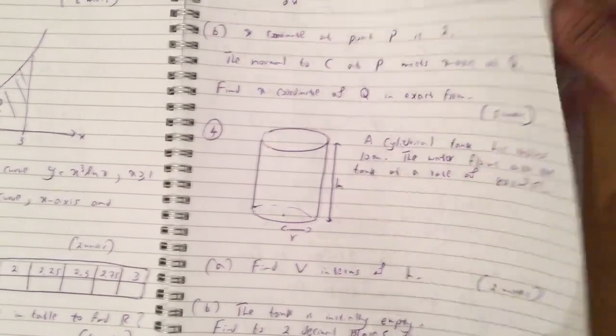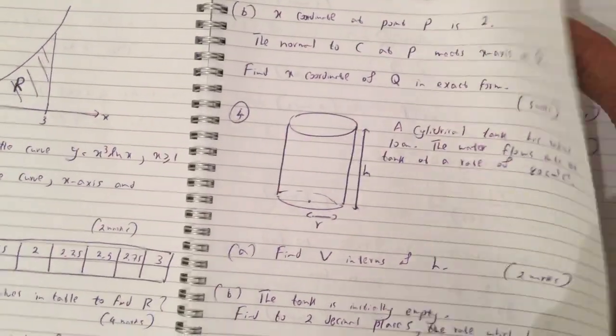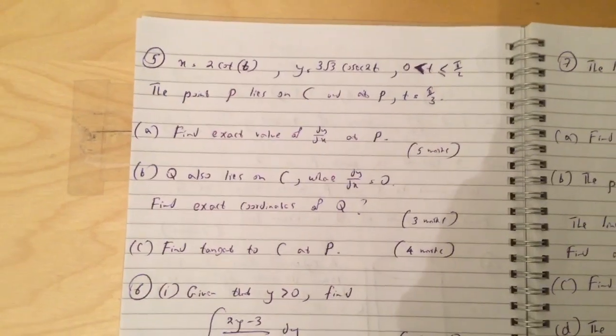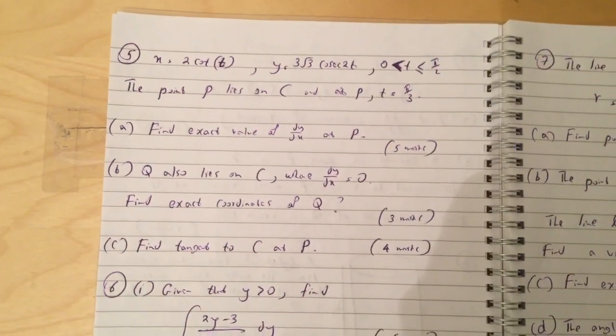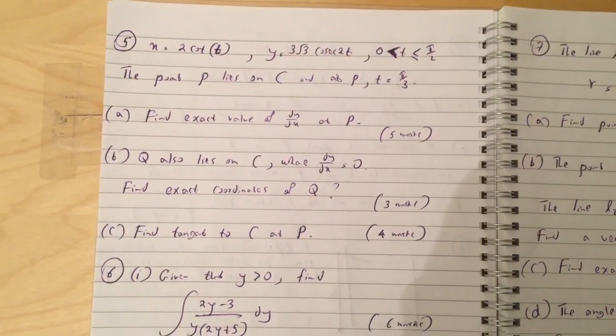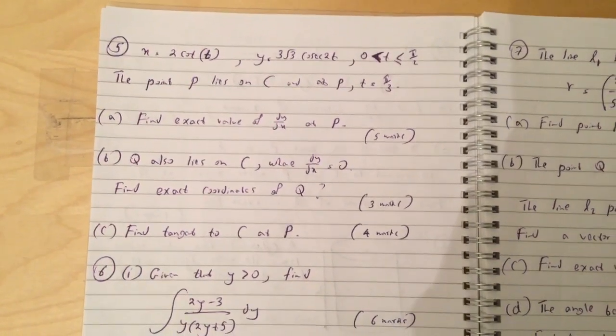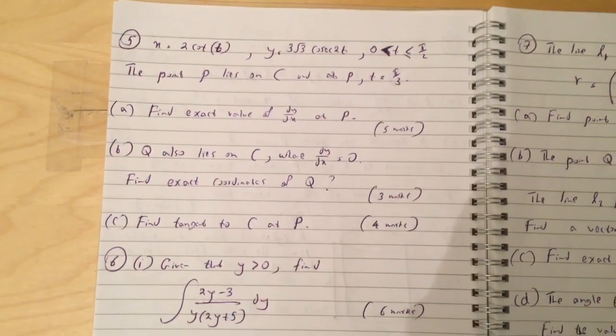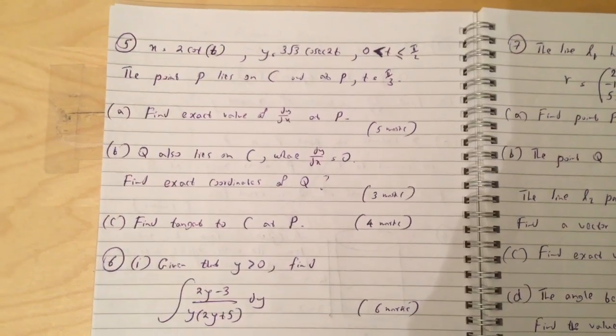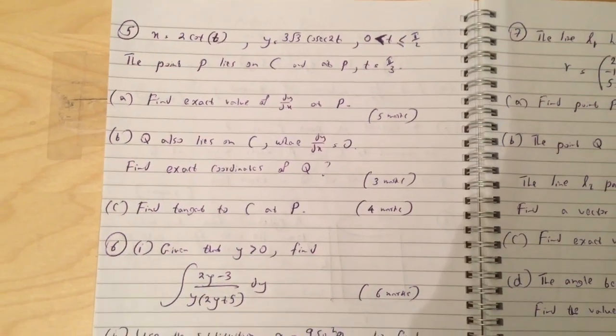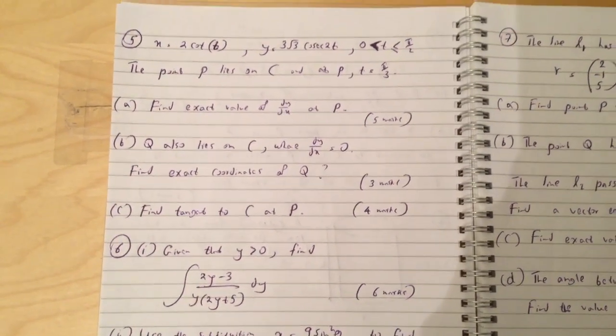Question 5: X equals cot t, Y equals 3 root 3 cos 2t, where 0 is less than t less than or equal to pi over 2. The point P lies on C, and at P, t is equal to pi over 3. Find exact value of dy dx at P.